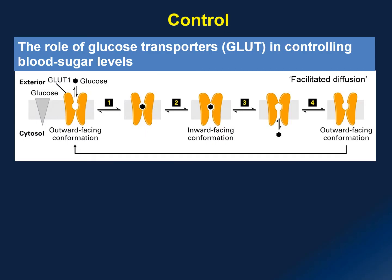That transporter protein is known as the glucose transporter, or the GLUT protein. A GLUT protein is involved in a process known as facilitated diffusion, which is a type of passive diffusion in which energy is not required.